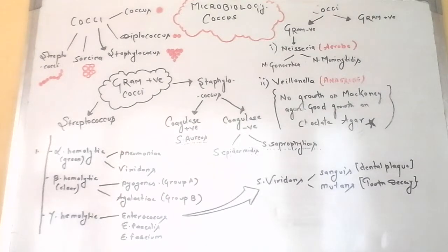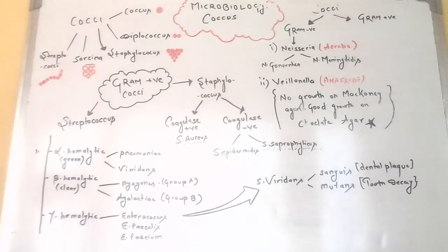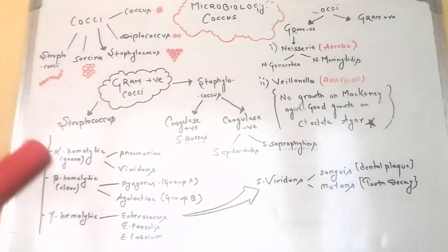These bacteria cause many different types of common diseases. Among the common cocci is Staphylococcus aureus, which appears as a cluster of cocci. Staphylococcus can often be found in the nose and on the skin without causing disease — it is also a normal flora of the skin. It is also responsible for causing conditions such as boils, pneumonia, meningitis, and toxic shock syndrome.